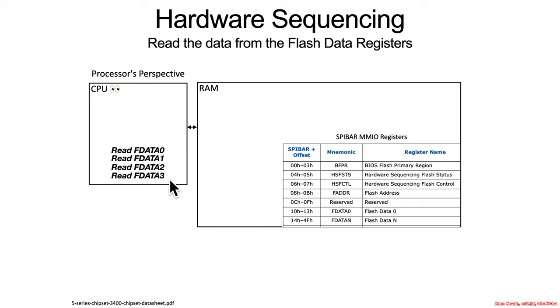And there you go. We successfully interacted with the SPI flash chip through the SPI BAR memory-mapped IO registers via the unseen SPI hardware component that's embedded somewhere deep inside the PCH.